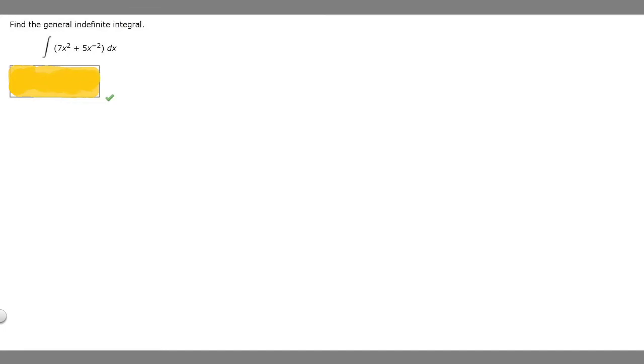In this problem we're told to find the general indefinite integral of 7x squared plus 5x raised to the minus 2. Basically what we need to do here is find the antiderivative of this function. Let's go ahead and do that.